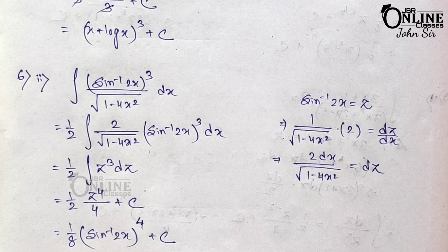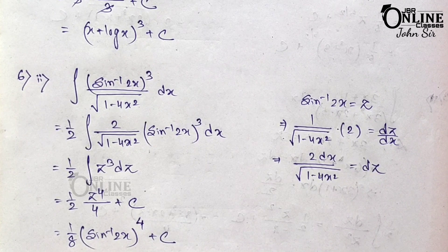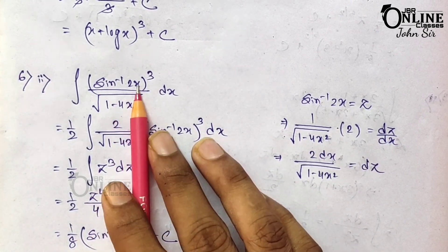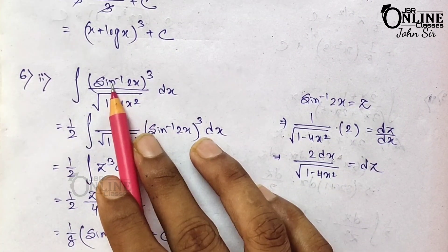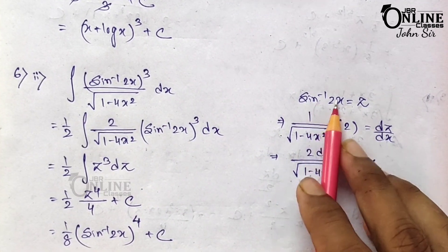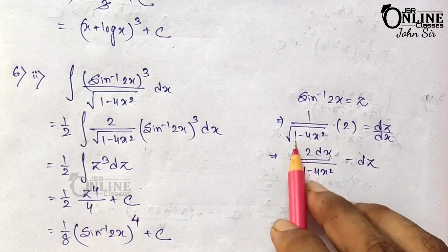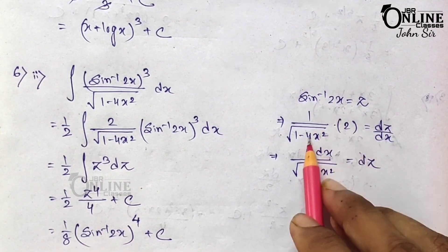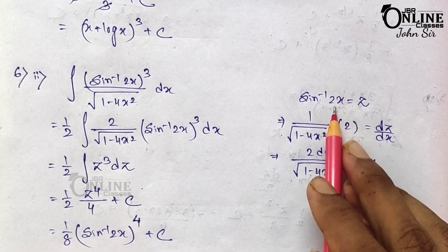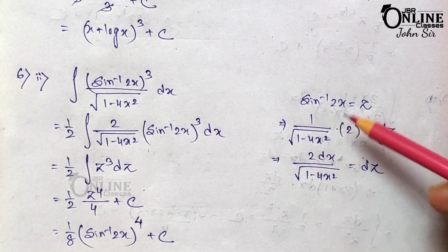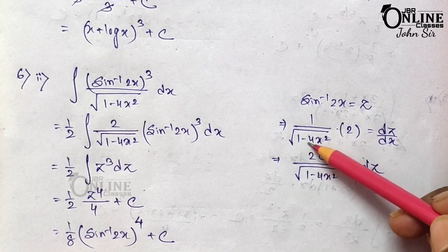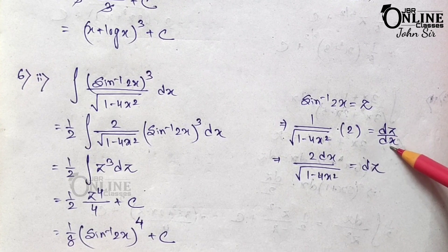Problem 6.1: Let tan⁻¹x = z because the derivative of tan⁻¹x is 1/(1+x²), which is already given — so you can solve it. Problem 6.2: ∫(sin⁻¹2x)³ / √(1 − 4x²) dx. Let sin⁻¹2x = z. The derivative of sin⁻¹x is 1/√(1−x²), but since we have 2x, we substitute 2x giving 1/√(1−4x²) · 2 = dz/dx.